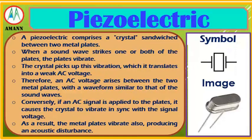Piezoelectric: a piezoelectric comprises a crystal sandwiched between two metal plates. When a sound wave strikes one or both of the plates, the plates vibrate. The crystal picks up this vibration, which translates into a weak AC voltage. Therefore, an AC voltage arises between the two metal plates with a waveform similar to that of the sound waves. Conversely, if an AC signal is applied to the plates, it causes the crystal to vibrate in sync with the signal voltage, and as a result, the metal plates vibrate also, producing an acoustic disturbance.